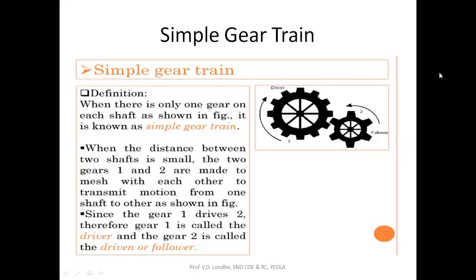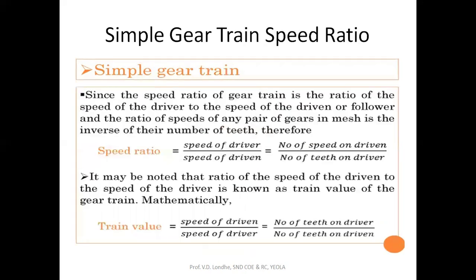First we will see the simple gear train. As shown in the diagram, one gear is the driver to which input is given, and the other is the follower or driven gear. Here one gear is mounted on each shaft, so power is transmitted from input to output — one gear is mounted respectively on each individual shaft.